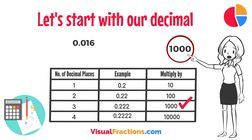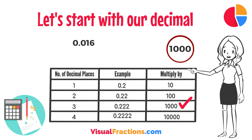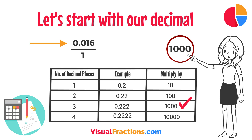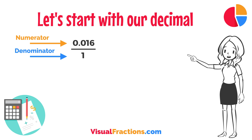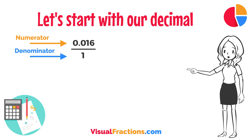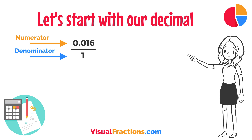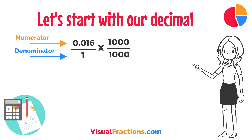To convert this decimal into a fraction, you initially put 0.016 over 1, essentially treating the decimal as the numerator in a fraction where the denominator is 1. This sets up the conversion process where we multiply both the numerator, 0.016, and the denominator, 1, by 1,000 because there are three decimal places.